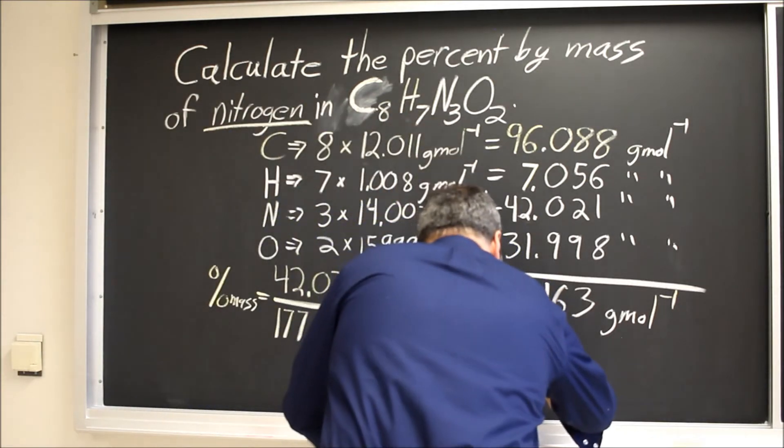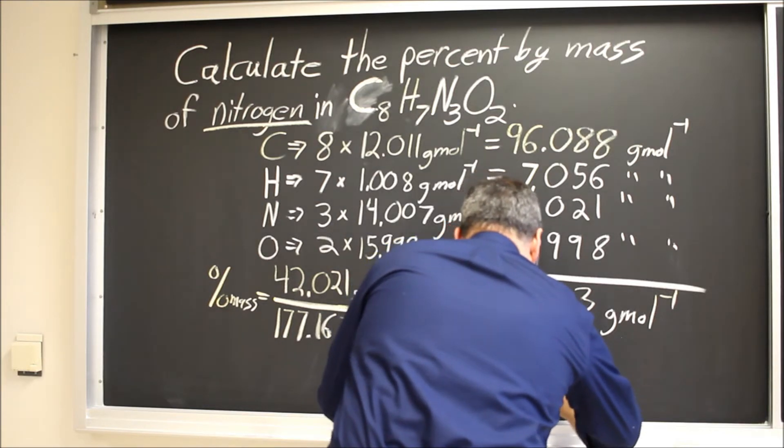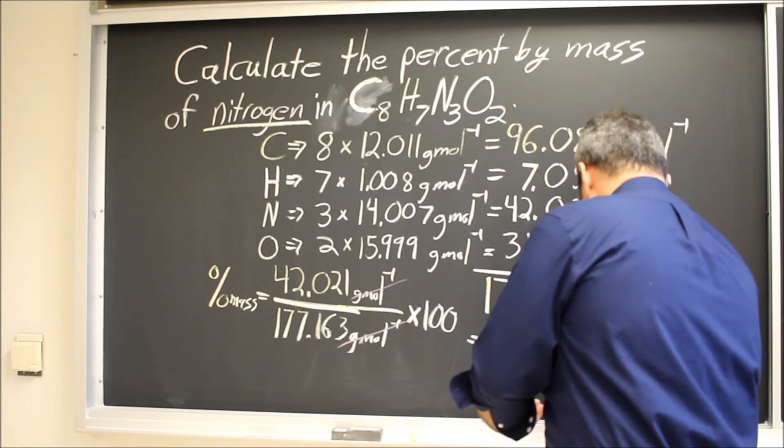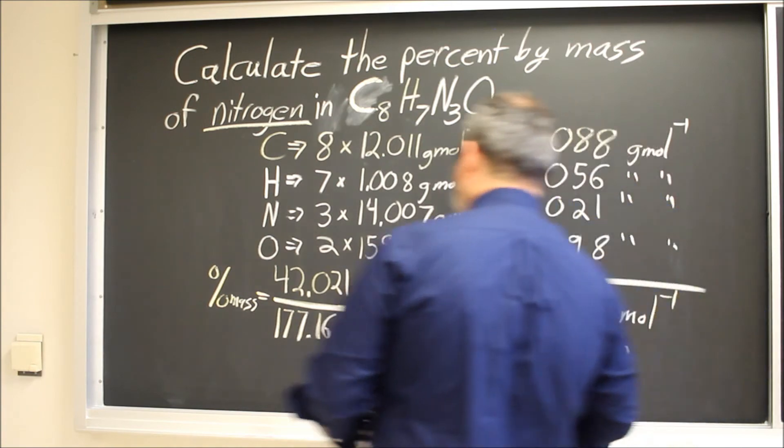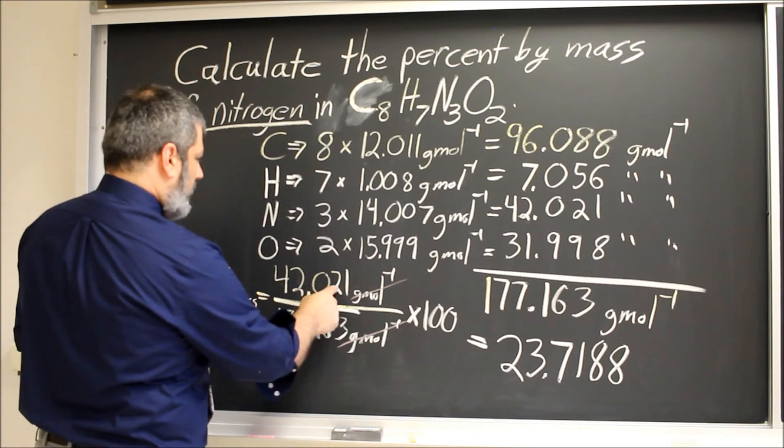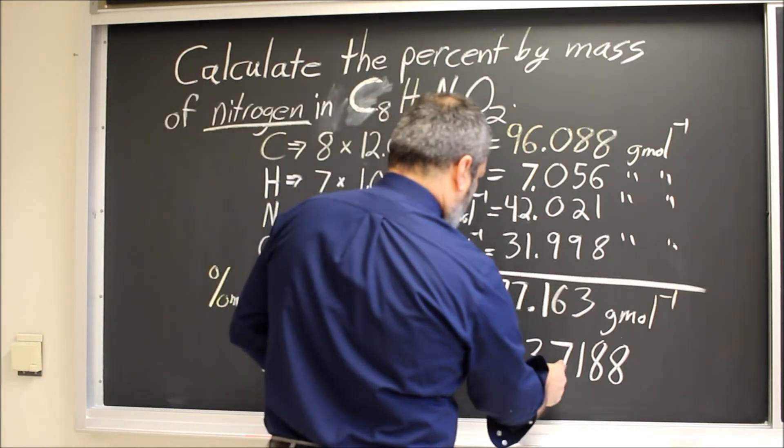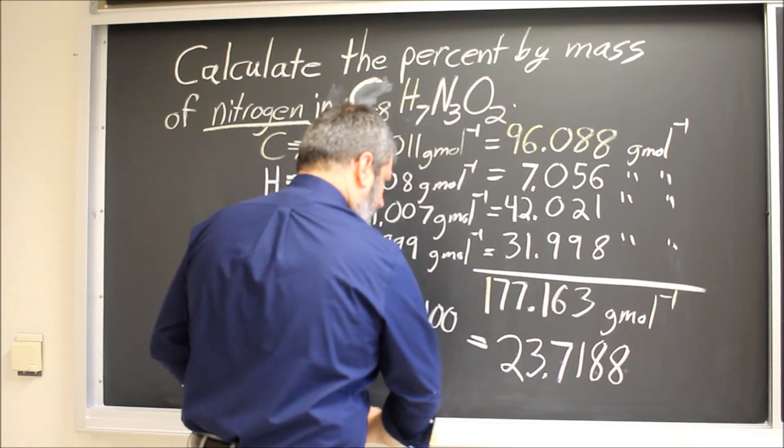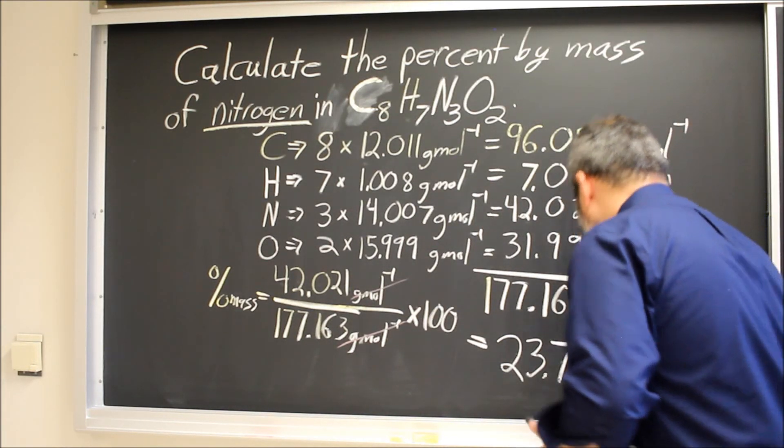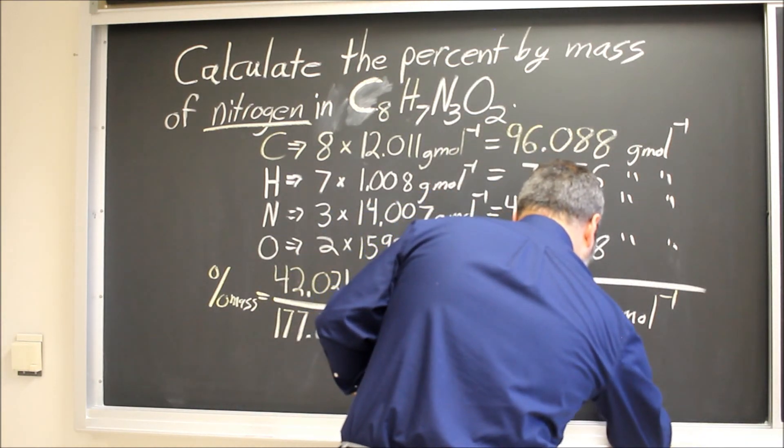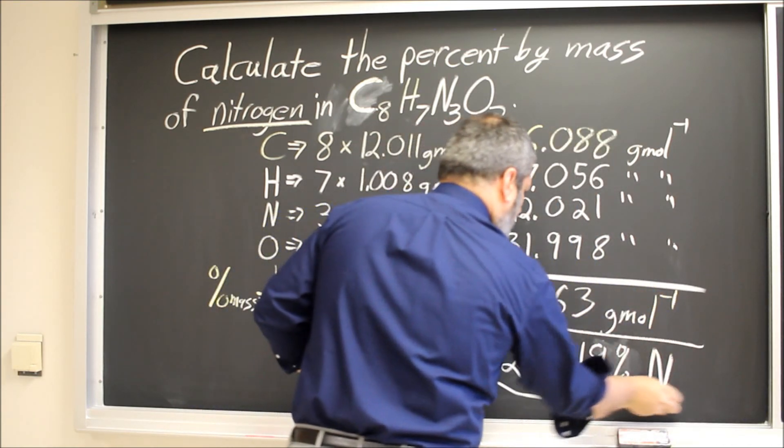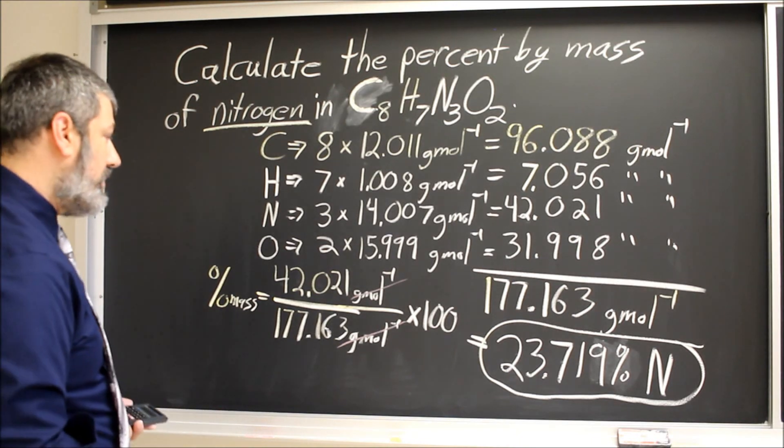And this gives me 23.7188. And now if we look for our significant figures, we have five significant figures here and six here. So we need to round this up. So that's our answer, 23.719 percent nitrogen by mass. Thanks so much.